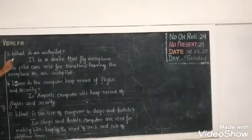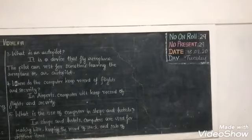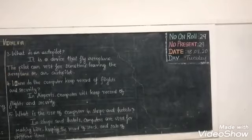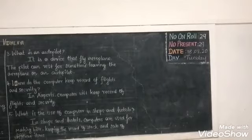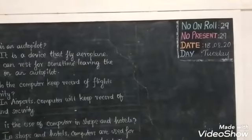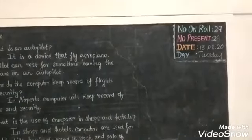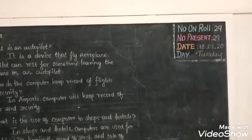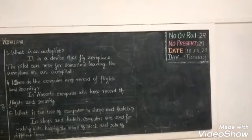The third question is: what is an autopilot? Autopilot is a device that flies the aeroplane. The pilot can rest for some time leaving the aeroplane on autopilot. It is a device used to fly the aeroplane automatically. When the pilot needs rest and can't drive for too long, they just switch on the autopilot mode, take a rest, and the flight automatically flies in the sky.